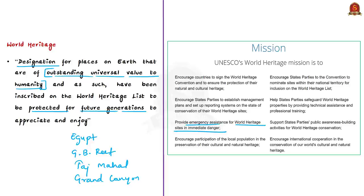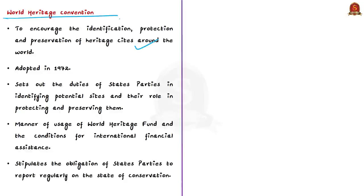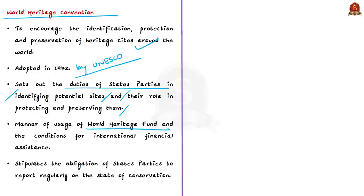The mission of UNESCO World Heritage includes providing emergency assistance for World Heritage Sites in immediate danger, encouraging participation of local populations in preserving their cultural and natural heritage, and helping state parties safeguard world heritage properties through technical assistance and professional training. A convention called the World Heritage Convention was adopted in 1972 by UNESCO. It sets out the duties of state parties in identifying potential sites and their roles in protecting and preserving these sites. By signing the convention, each country pledges to conserve not only world heritage sites on their territory but also to protect national heritage.